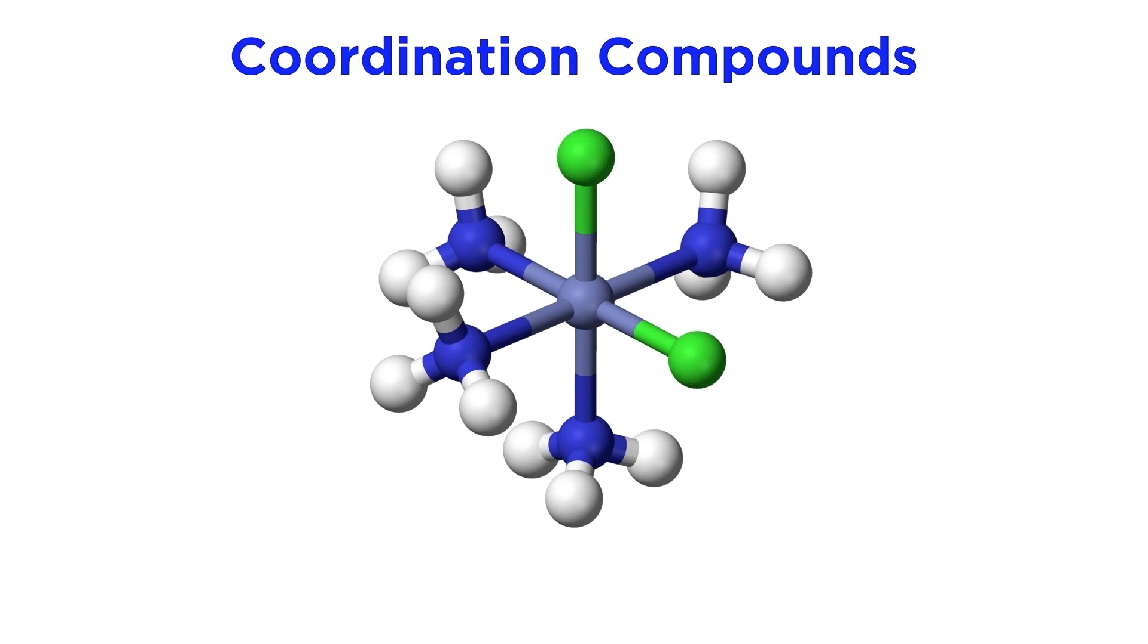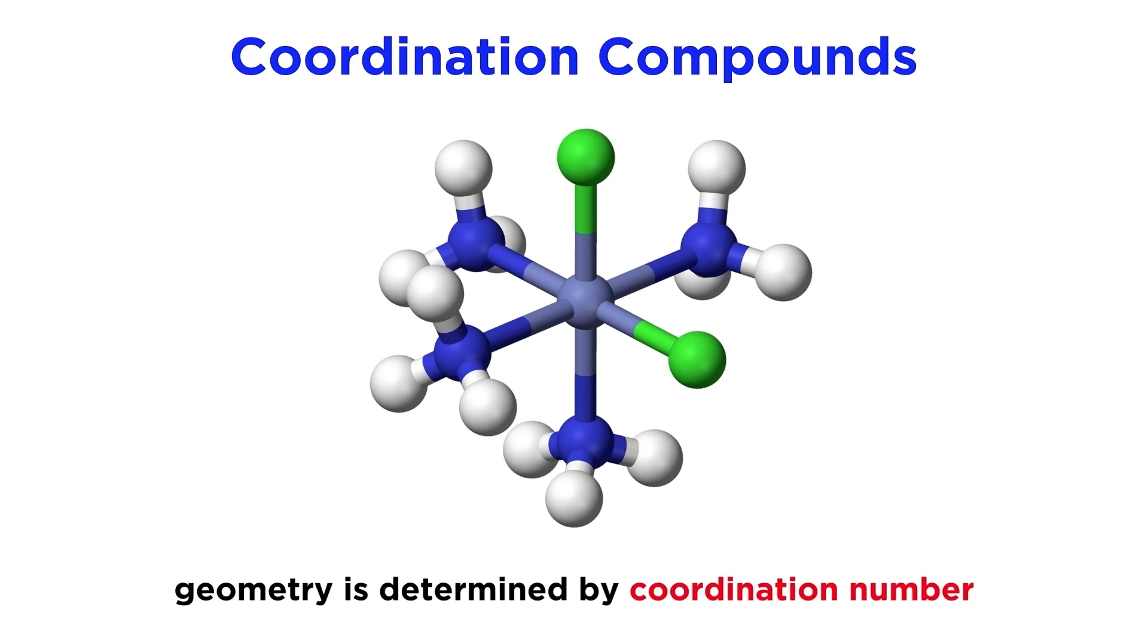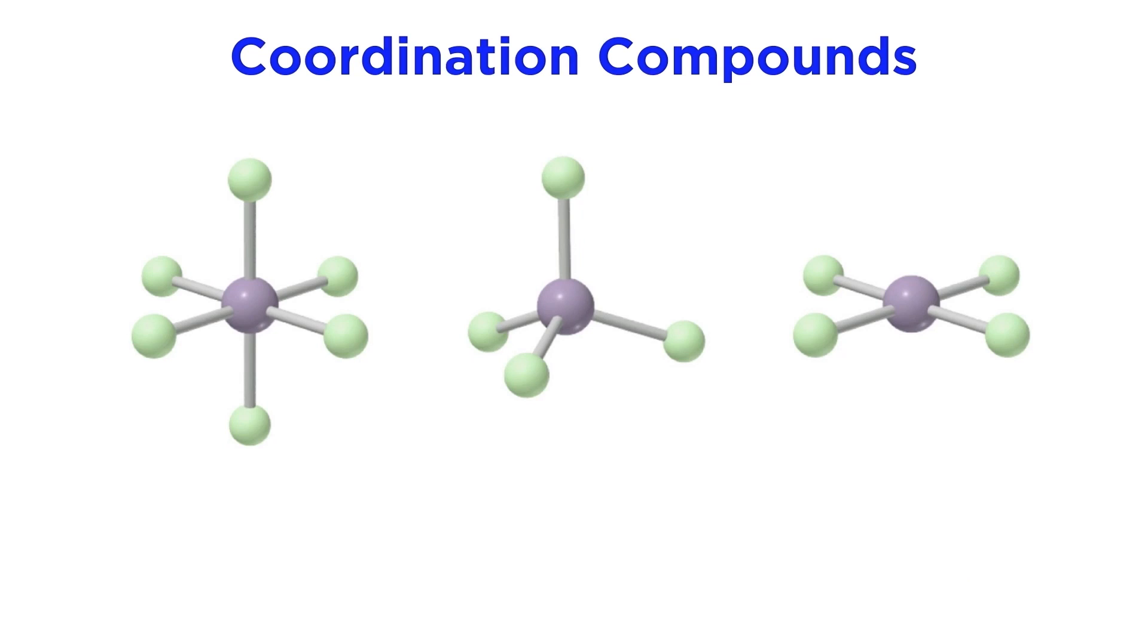Coordination compounds are fascinating structures that display a wide variety of geometries. What determines the type of geometry that a coordination compound will exhibit? More than anything else, that would be the coordination number of the compound. Once again, this is the number of donor atoms that are interacting with the central metal atom, or in other words, the number of coordinate covalent bonds that are being made to the central atom in the complex. There are a few types of geometry that we will see over and over again, as they are the most common.